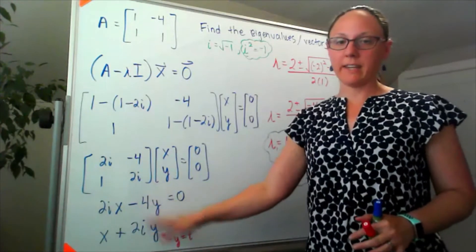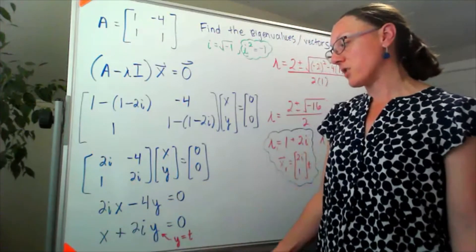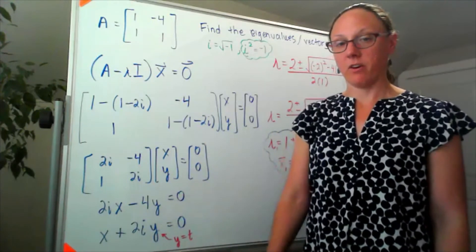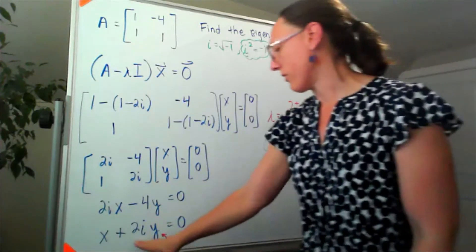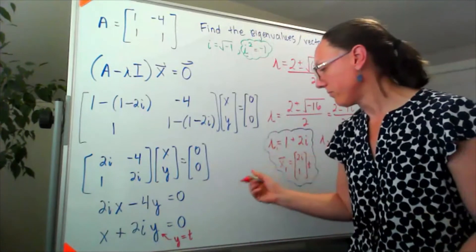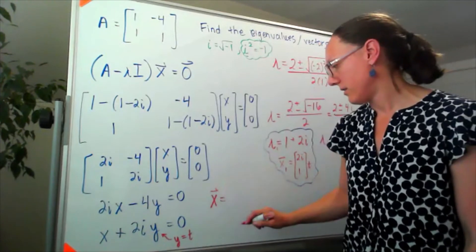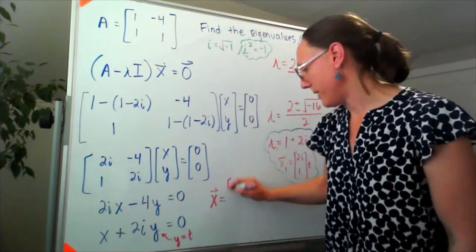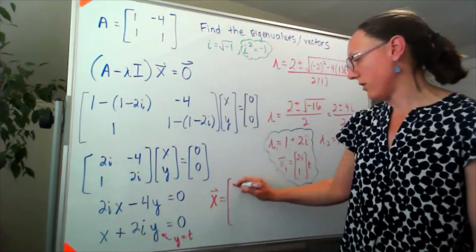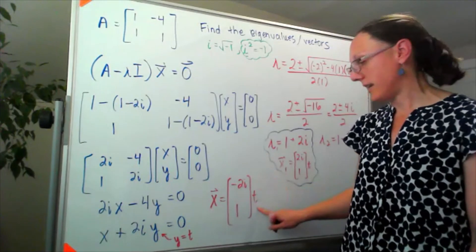So just to check that they really did give us the same information, on that bottom row if I multiply by 2i, I will get back what we started with on the top, so we're good. So if I let y be equal to my free variable t, then x would be, if I move that over, I'll have negative 2i t.